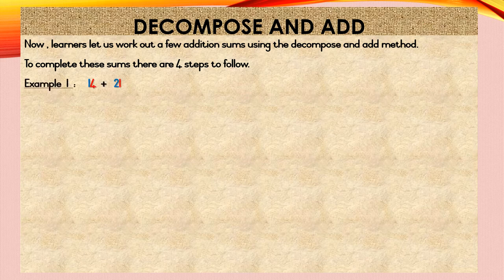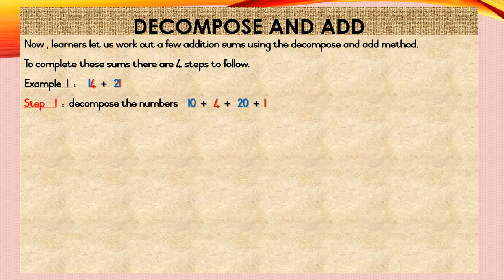Example 1: 14 plus 21. Step 1: Decompose the numbers. 14 when decomposed into tens and units is 10 plus 4. 21 when decomposed into tens and units is 20 plus 1. So step 1 will read 10 plus 4 plus 20 plus 1.